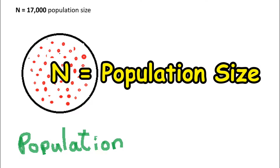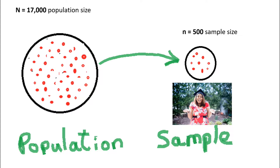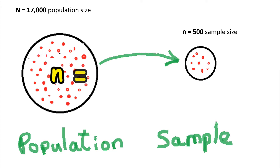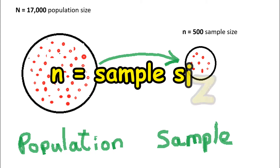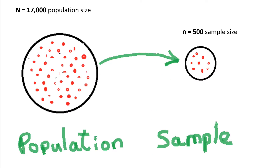It would be very time consuming to survey all 17,000 students, so we take a sample that is a subset of the population. We use the lower case n, little n, to denote the sample size. In this case, little n is 500. This smaller number of 500 students is called a sample.